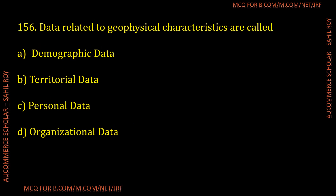Question number 156: Data related to geographical characteristics are called which kind of data? The options are: Option 1 demographic, Option 2 territorial, Option 3 personal, and Option 4 organizational data.